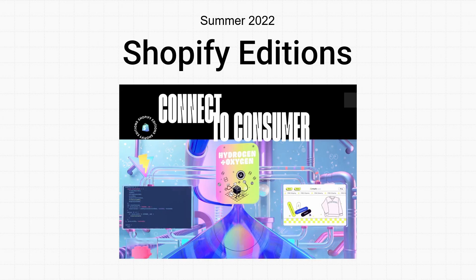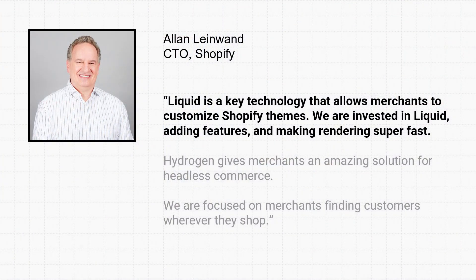Now let's talk about where we're going. Summer Editions launched earlier this year in June, and one feature in particular got a lot of attention — Hydrogen. Many developers were wondering if Hydrogen represented the way that Shopify wants developers to build storefronts. People were asking: is Hydrogen going to replace Liquid? Today I want to address that concern. The TLDR is no. We are very, very heavily invested in Liquid. As our CTO Alan says, Liquid is a key technology that allows merchants to customize Shopify themes. We are invested in adding features and making rendering super fast.